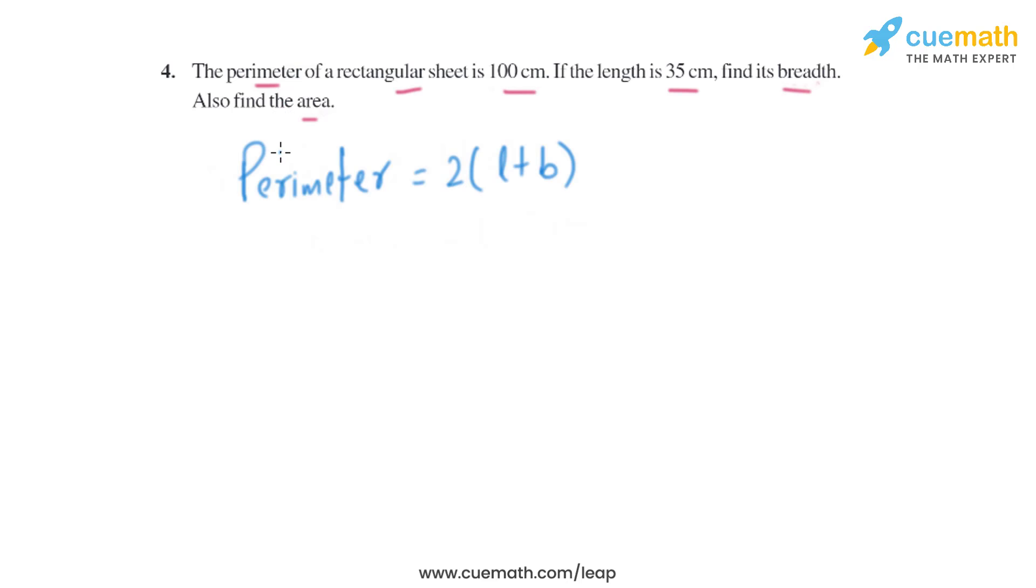We know that the formula to find the perimeter of a rectangle is 2 into L plus B. The perimeter is given, that is 100, and the length is given, that is 35. So we can find B from there easily. It will be 100 equals 2 into 35, which is 70, plus 2B. So 2B will equal 100 minus 70.